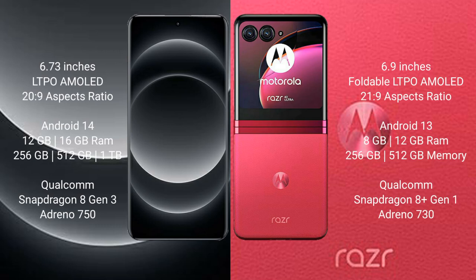The Xiaomi 14 Ultra comes with a 6.73-inch LTPO AMOLED display with a 20:9 aspect ratio. The Motorola Razr 40 Ultra comes with a 6.9-inch foldable LTPO AMOLED display with a 21:9 aspect ratio.